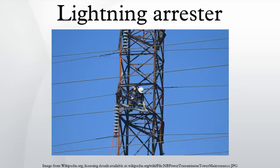Their purpose is to limit the rise in voltage when a communications or power line is struck by lightning or is near to a lightning strike. If protection fails or is absent, lightning that strikes the electrical system introduces thousands of kilovolts that may damage the transmission lines, and can also cause severe damage to transformers and other electrical or electronic devices. Lightning-produced extreme voltage spikes in incoming power lines can damage electrical home appliances.